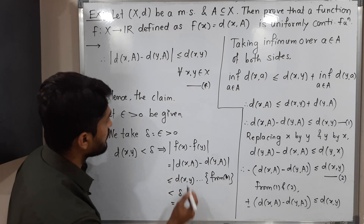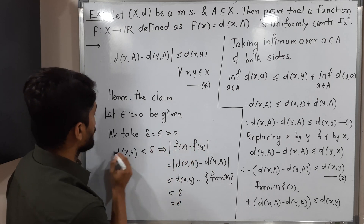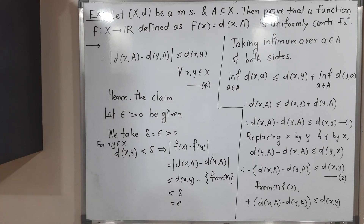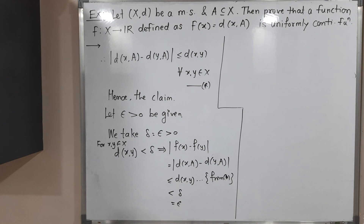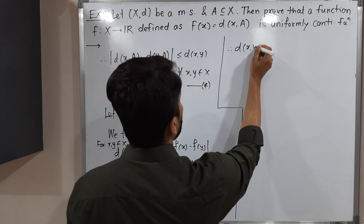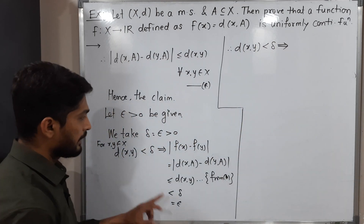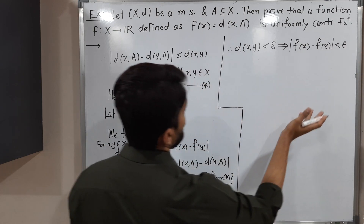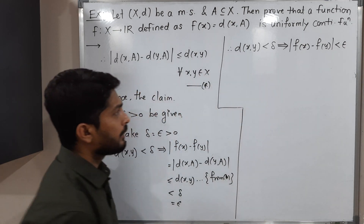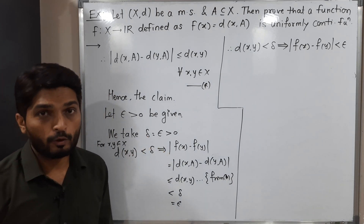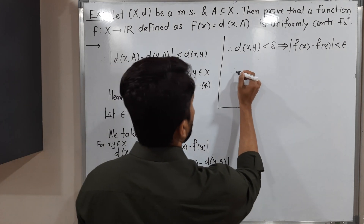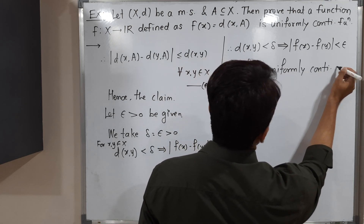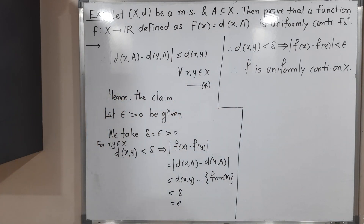So for all x, y ∈ X, d(x,y) < δ implies |f(x) - f(y)| < ε. Since δ depends on ε only and not on any particular point, we can say f is uniformly continuous. Therefore, f is uniformly continuous on X. In this way, we proved the given function f is uniformly continuous.